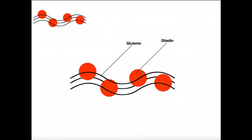These red, more globular-shaped proteins are called gliadins. Gluten itself is really just a conglomerate of both glutenins and gliadins strung together in a fashion like this.